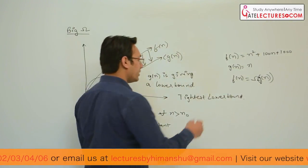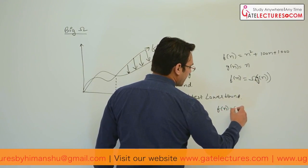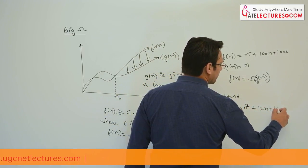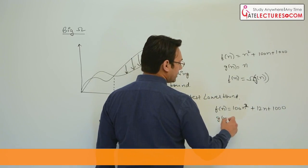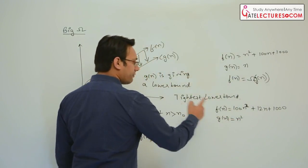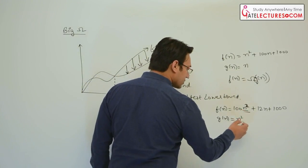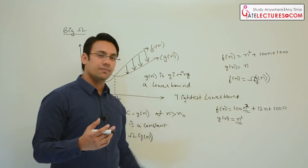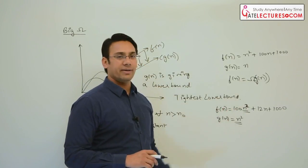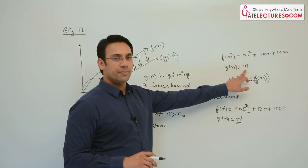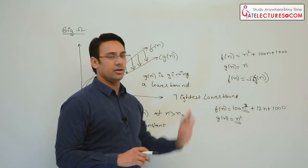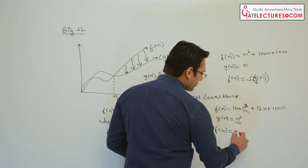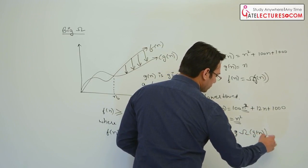Now, let us say Fn is 100n² + 12n + 1000 and Gn is n². The highest power is n² in both cases. Just as order notation is defined by the highest power, this Omega notation is also defined by the highest power. Therefore, I can say that Fn is Omega of Gn in this case as well.